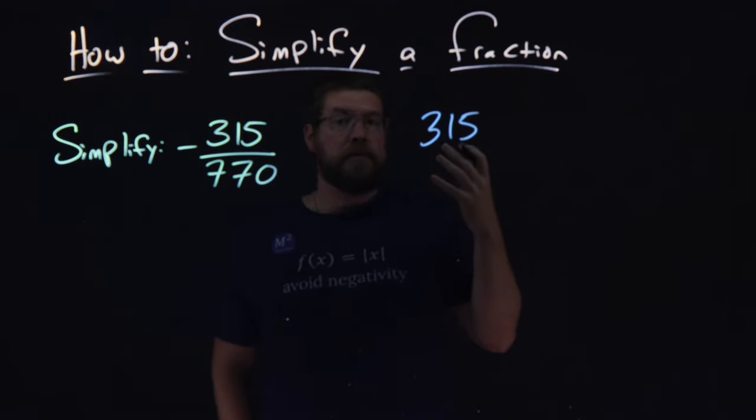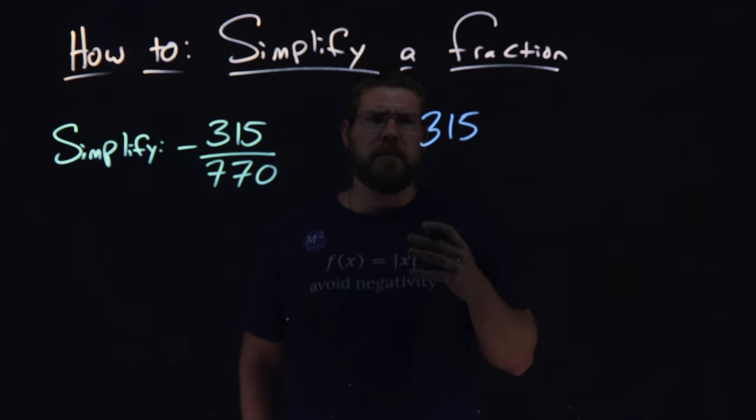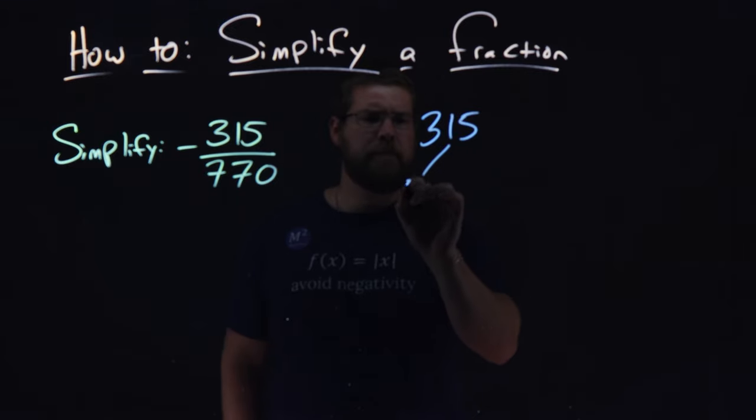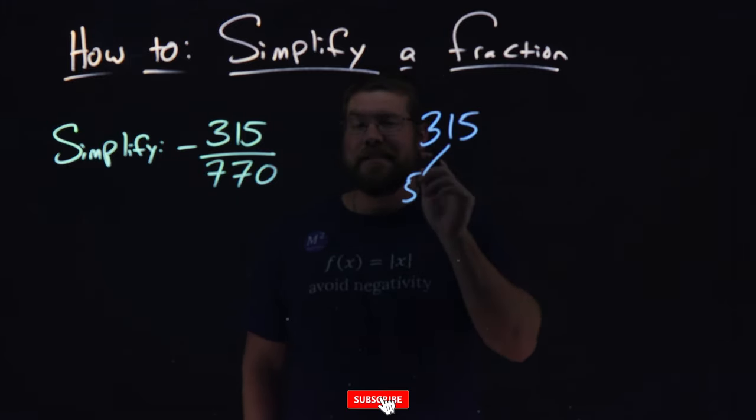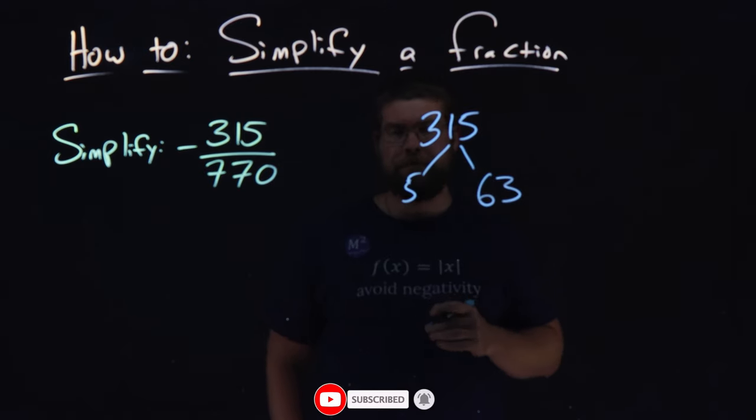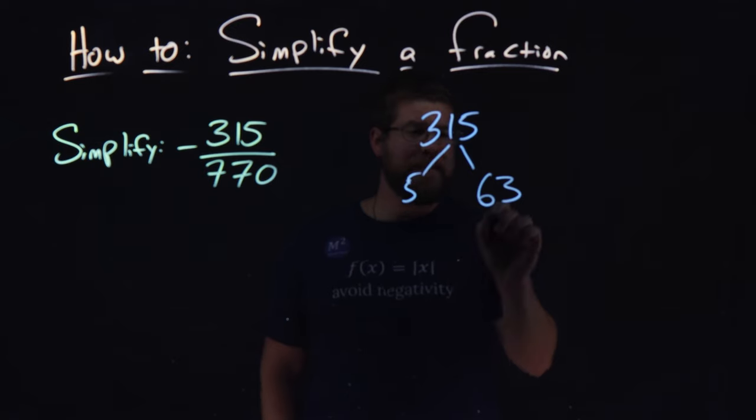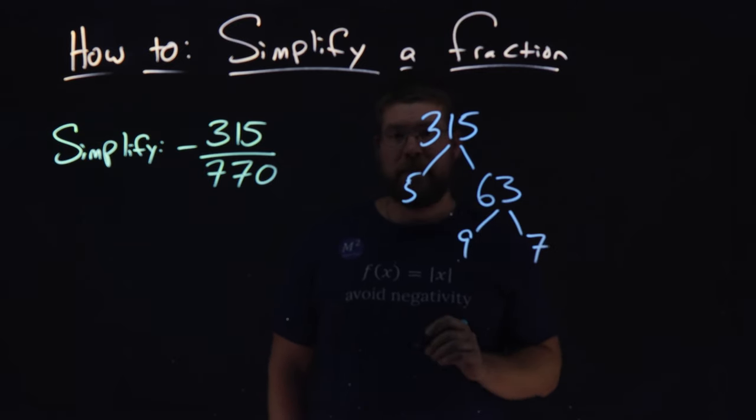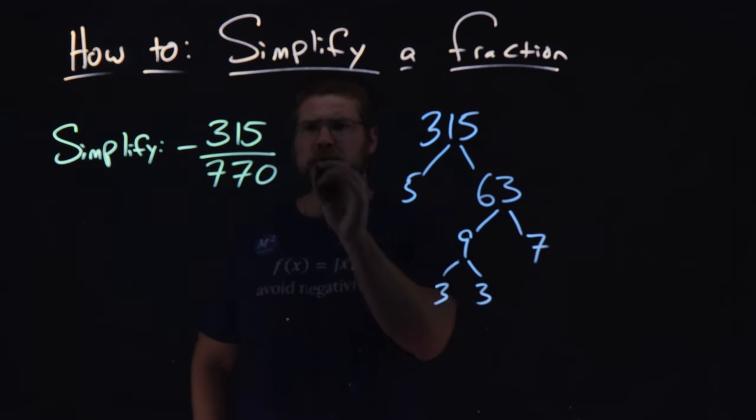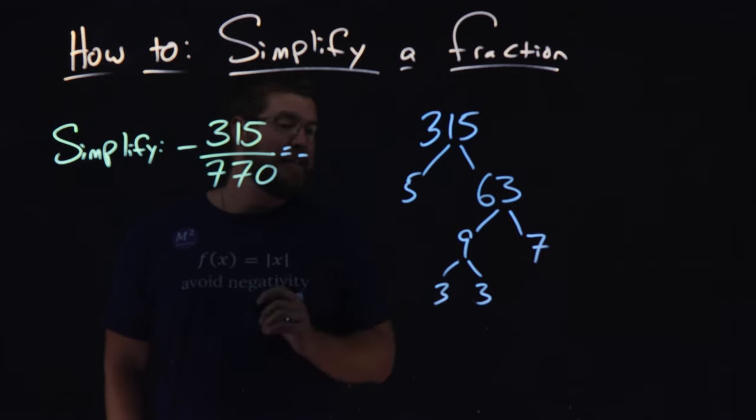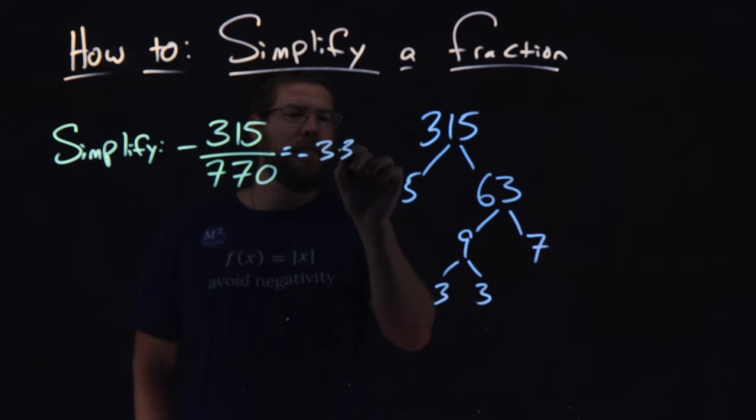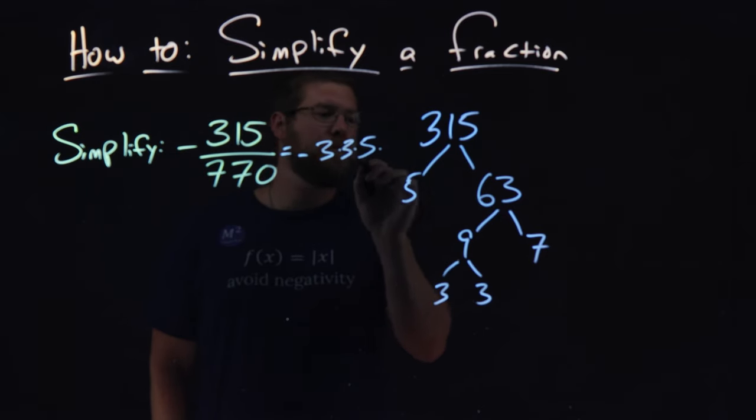315, what does that break down to be as prime numbers? Well, it ends in a 5, so we know 5 goes into 315. 5 times 63 gives me that 315. Now, 63 is 9 times 7, and 9 is 3 and 3. So that 315 is a breakdown of these prime numbers: 3 times 3 times 5 times 7.